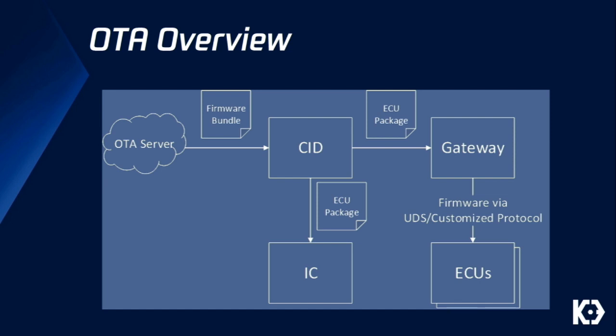OTA server deploys bundles to CID, CID deploys to IC and IC updates itself, and CID also deploys an update package to the gateway. The gateway updates all ECUs and updates itself, both performed by boot image. We showed an Easter Egg video last year, and the OTA procedure is what we used to deploy our frameworks into the different ECUs. Now Wenkai Zhang will tell us how we modified and patched those frameworks and how the whole Easter Egg works.